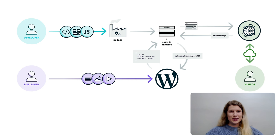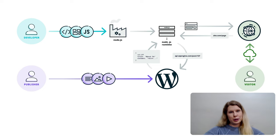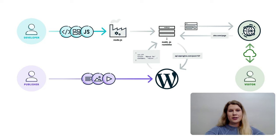Users typically interact with a headless WordPress site like this. The publisher creates and manages content, such as blog posts and pages, inside of WordPress — the same as in a traditional WordPress architecture. The developer writes code to control how the site looks and functions using JavaScript, typically a framework such as Next.js, Faust.js, Nuxt, or SvelteKit.